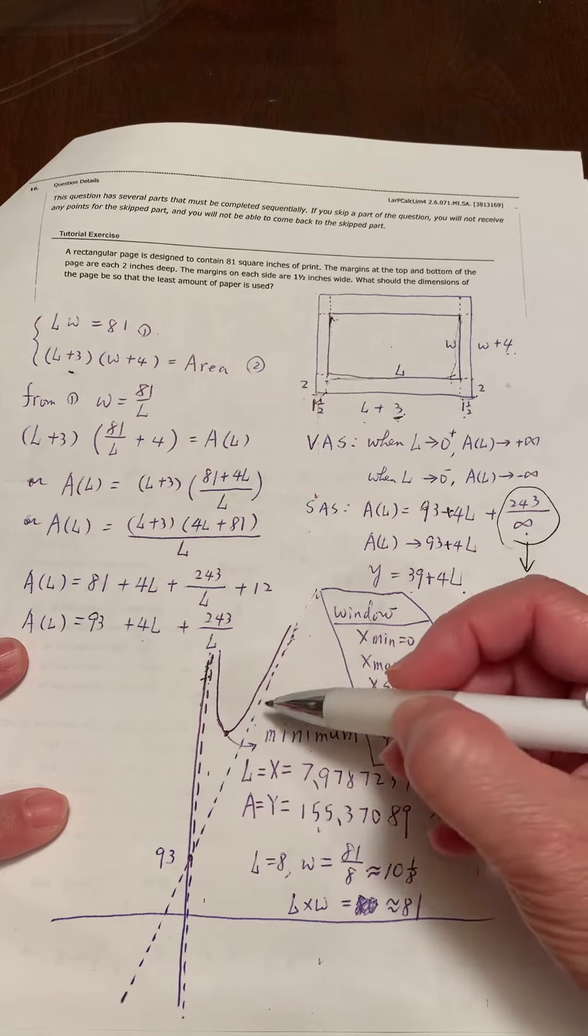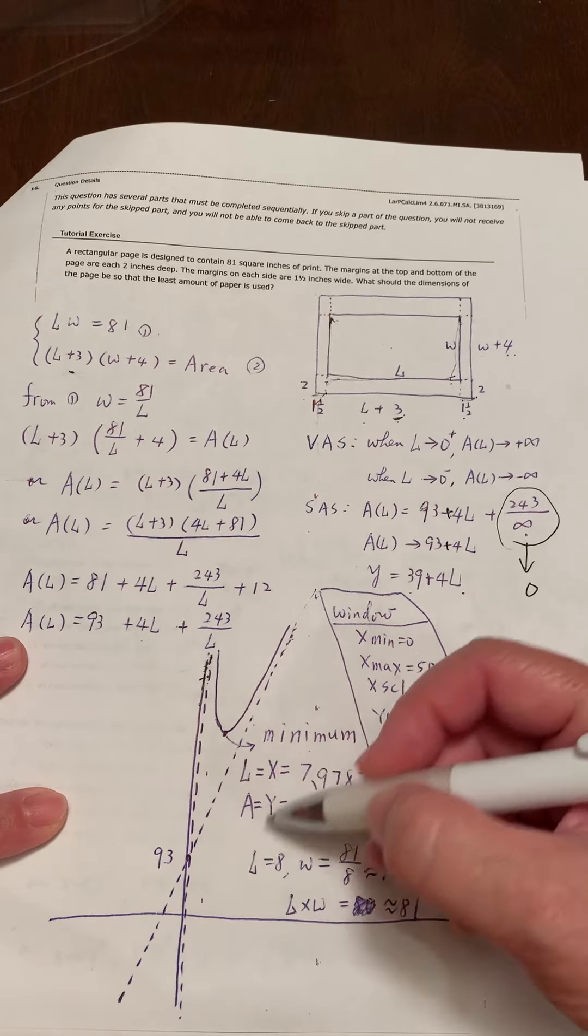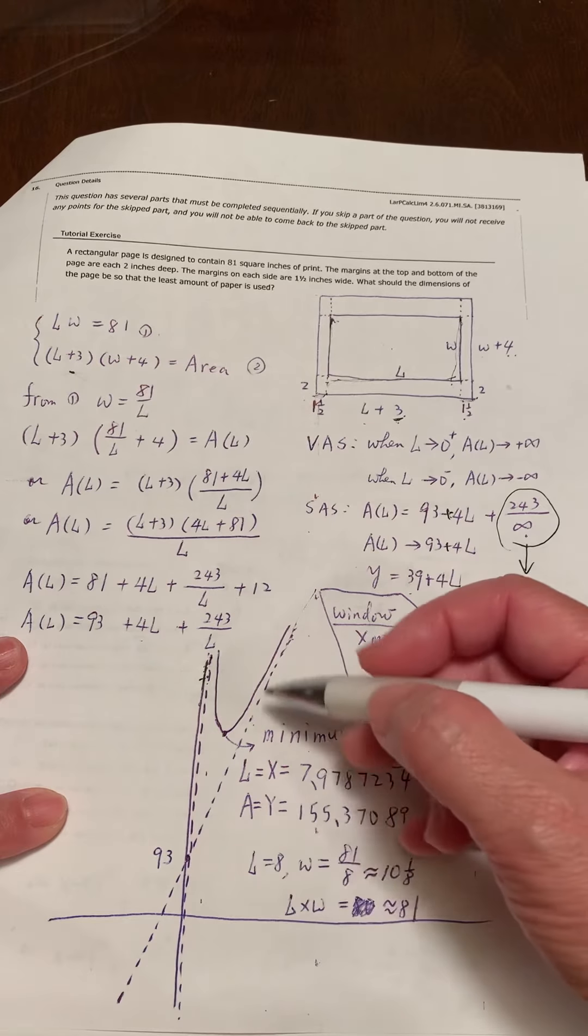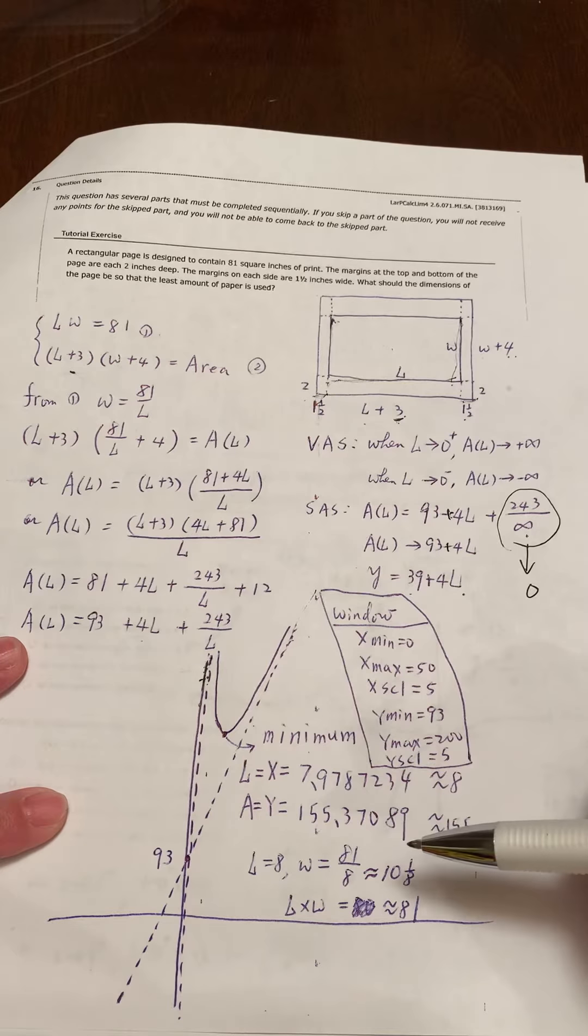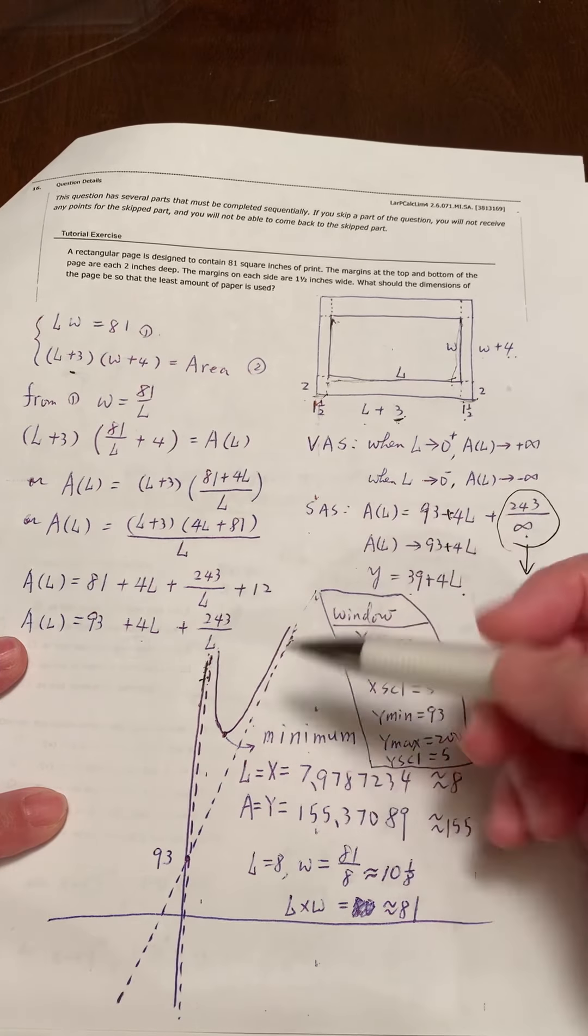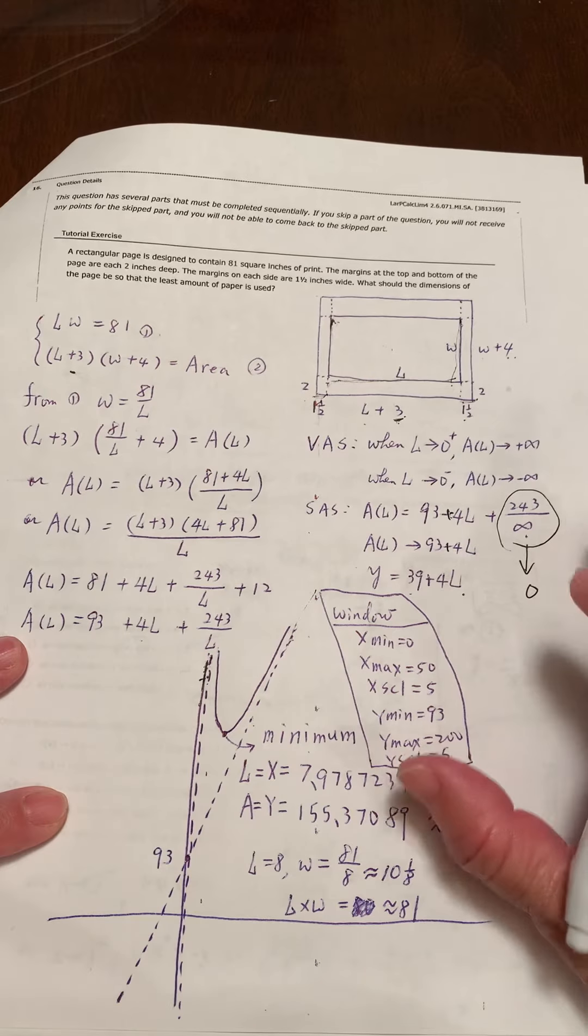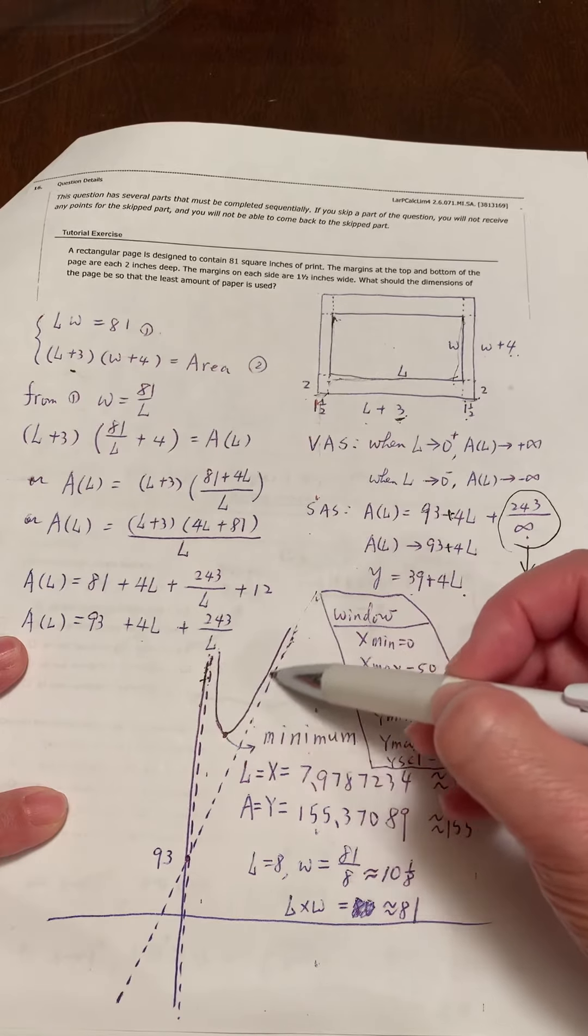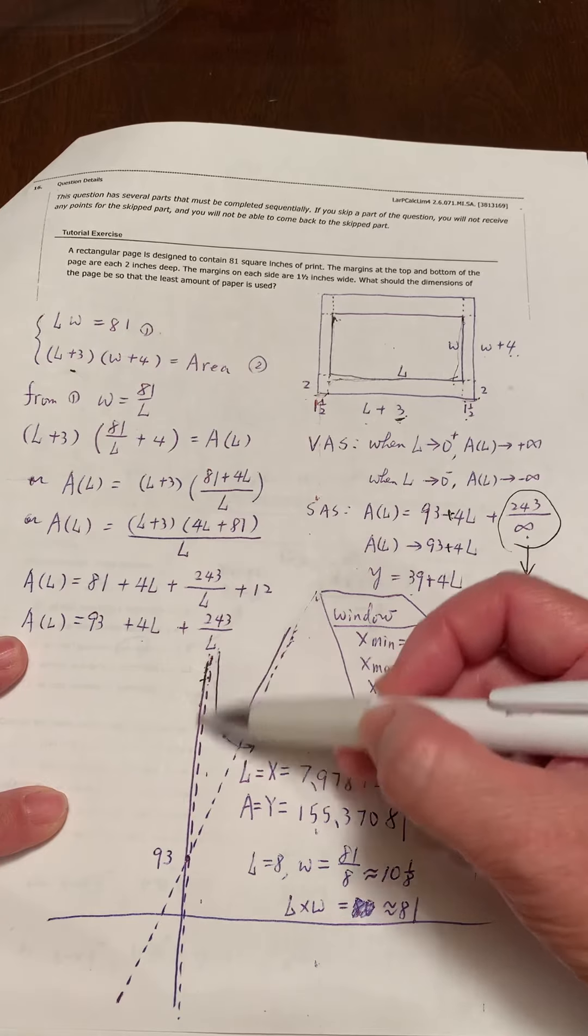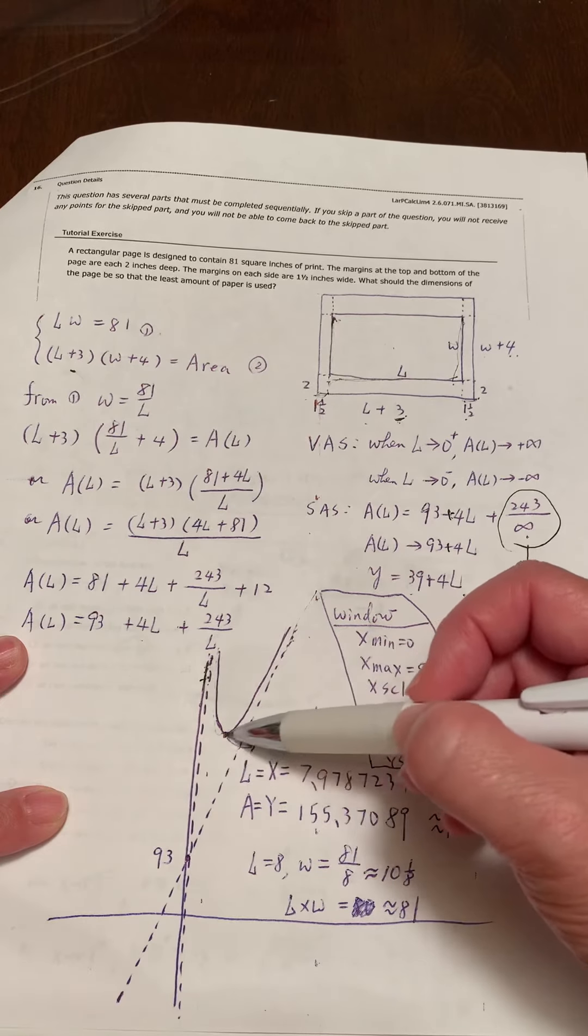So l equals to zero is the y equals to zero line. The graph should be here, or here, or here. We don't know until we really graph it. I think this question, you better use a graphing calculator to graph it, that's easier for you.